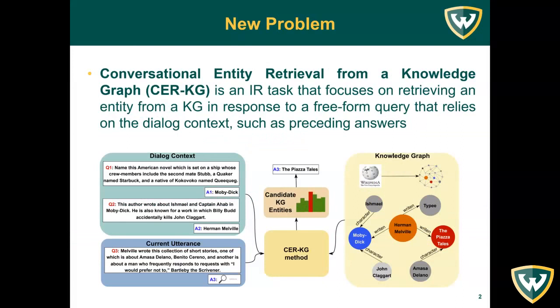In this paper, we introduce a new problem of conversational entity retrieval from a knowledge graph, which focuses on retrieving an entity from a knowledge graph in response to a free-form query that relies on a dialogue context, such as preceding answers. Here we can see an example of an information-seeking dialogue in which the answers are entities retrieved from a knowledge graph.